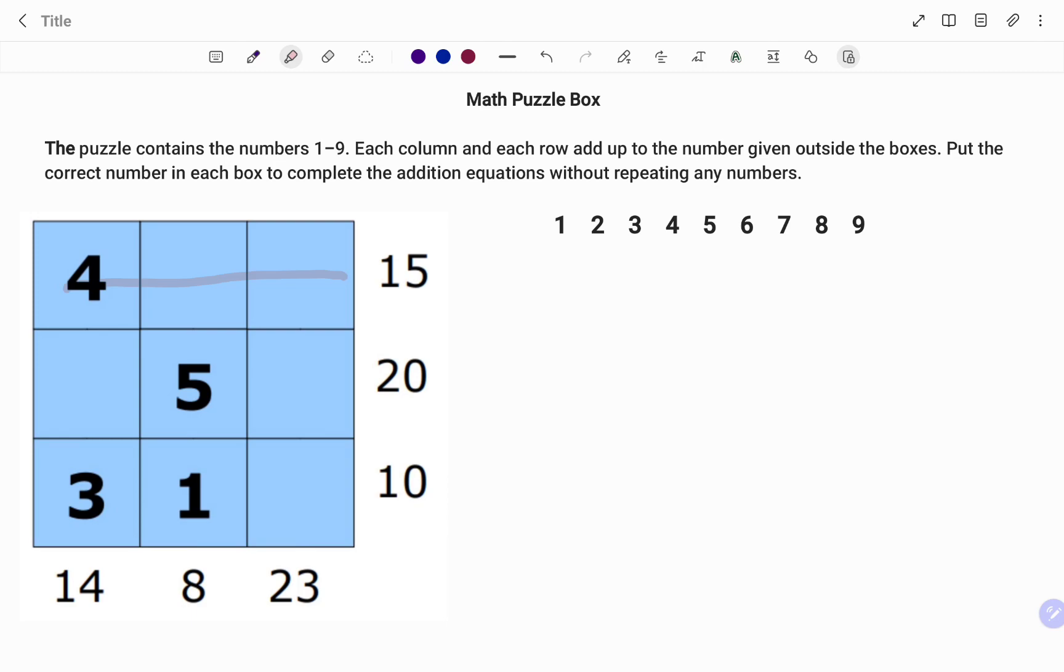So therefore the first step is to strike out all the numbers that have been used since I can't repeat any number. So I have one out, I have three out, four and five. I'm left with two, six, seven, eight, and nine.